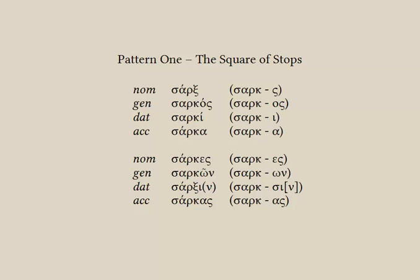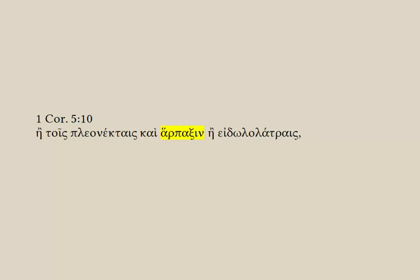Notice first the forms over on the right — it's using the masculine and feminine endings from our core pattern. Then look down the actual forms in the paradigm. You'll see that all the endings are clearly visible except for the nominative singular and the dative plural, where that sigma combines with the stem in keeping with the square of stops. Here's an example in a passage.